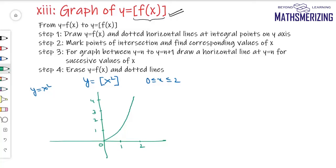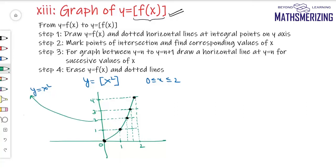The first step is to draw y = f(x) and draw dotted horizontal lines at integral points y = 4, 3, 2, and 1. The second step is to mark points of intersection and find corresponding values of x. If I put y = 2, I get x = √2 — so this value is √2. Similarly, if I put y = 3, I get x = √3.